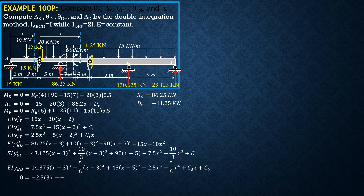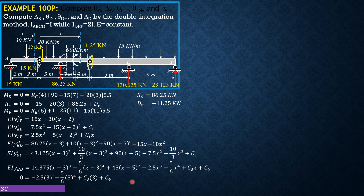Applying boundary condition: when x equals 3 for BCD, yC equals zero. The first two terms vanish, and the 90 bracket term is ignored since its argument is negative. So we have: negative 2.5(3) cubed minus (5/6)(3) to the fourth plus C3 times 3 plus C4 equals zero. This gives the first equation: 3·C3 plus C4 equals 135. Call this Equation 1.